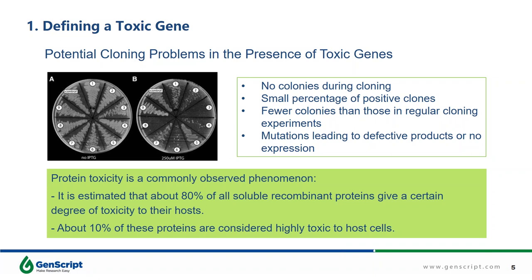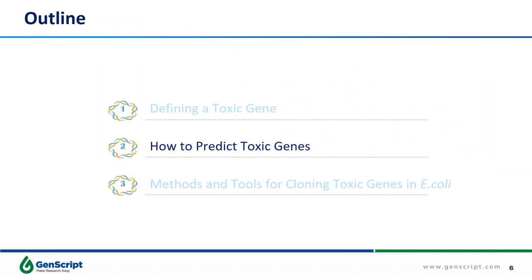There are several problems when subcloned DNA contains toxic genes. You can find fewer colonies than those in regular cloning experiments, and sometimes the target DNA fragment contains a mutation or some DNA parts are missing. A more severe problem is that there are no colonies at all in cloning experiments. Usually we attribute this to low efficiency of DNA assembly, but from now on, please also double-check if your DNA fragment contains toxic genes. You may ask: how would I know if my gene of interest is a toxic gene? In the next part, we will answer this question.